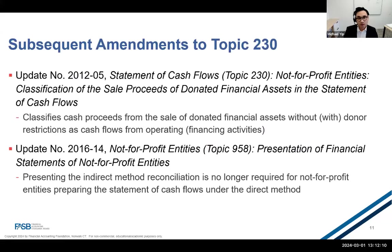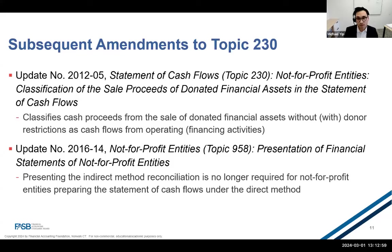ASU 2012-05 addresses the diversity in practice surrounding the treatment of cash flows from the sale of donated financial assets. If donated financial assets are provided without any not-for-profit imposed restrictions and converted nearly immediately to cash, that cash flow would be considered operating activities. If there are restrictions or limitations on the use of contributed resources for long-term purposes, those cash receipts would be classified as financing activities; otherwise, they should be classified as investing activities. ASU 2016-14 amends the reporting for not-for-profit entities: if a not-for-profit entity uses the direct method, it would not be required to present or disclose the indirect method reconciliation of cash flow from operating activities back to net income.